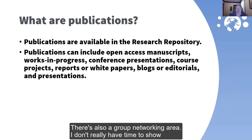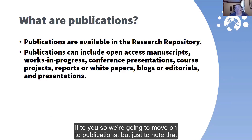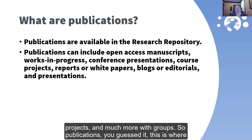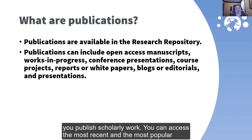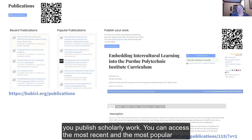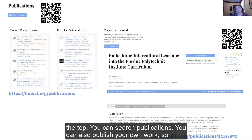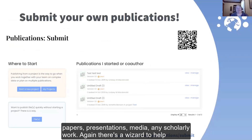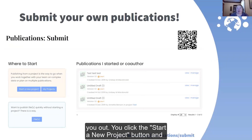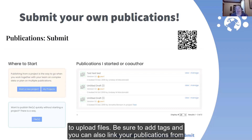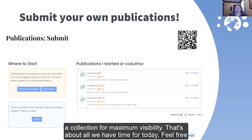There's also a group networking area — I don't really have time to show it to you, so we're going to move on to publications. Just a note that the group networking area does allow you to have discussions, share files, work on projects, and much more with groups. Publications — you guessed it — this is where you publish scholarly work. You can access the most recent and most popular publications here, again linked from the bottom and QR code at the top. You can search publications and also publish your own work: papers, presentations, media, any scholarly work. Again, there's a wizard to help you out. You click the Start a New Project button and it walks you through the process, asking you for relevant information and to upload files. Be sure to add tags, and you can also link your publications from a collection for maximum visibility.